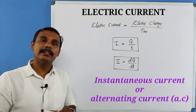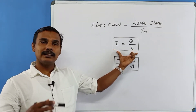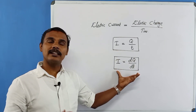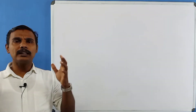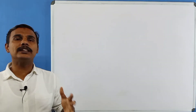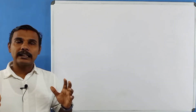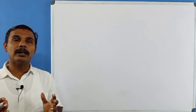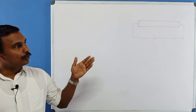In this chapter we deal with direct current DC. AC is alternating current as instantaneous current, and we learn about that approximately in the seventh chapter. What is the electric current we define?